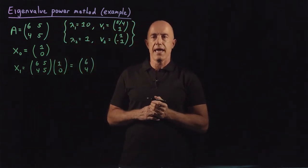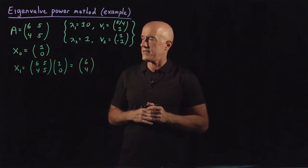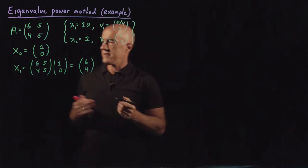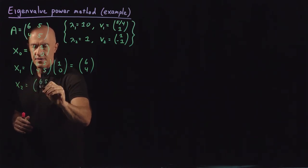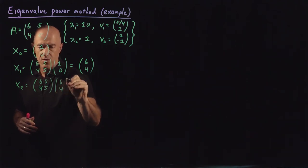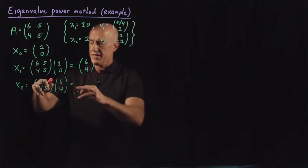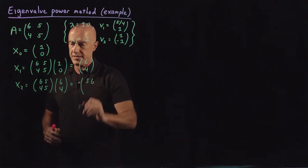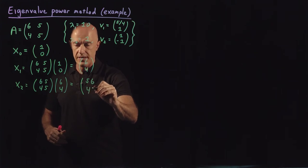We continue multiplying by A — we're going to get very large numbers. I'm not going to normalize here; it's not necessary. So x2 is [6, 5; 4, 5] times [6, 4]. I can still do this multiplication without a calculator. This is 36 plus 20, so that will be 56, and this is 24 plus 20, so that will be 44.